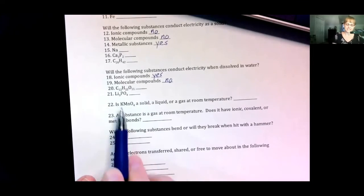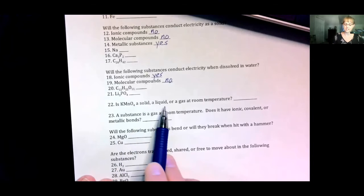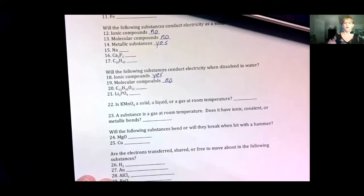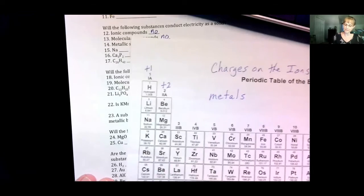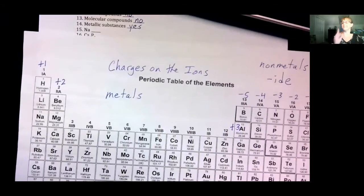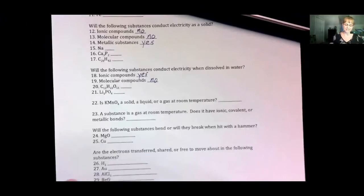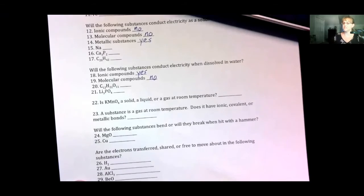Number twenty-two, is KMNO4 a solid, a liquid, or a gas at room temperature? Well, remember, ionic compounds are always solids at room temperature. And metals, except mercury, are always solids at room temperature. Molecules can be solids, liquids, or gases. So, let's see which one this is. KMNO4. Remember, K is a metal, MN is a metal, O is a non-metal. Aha! So, this is ionic. Ionic compounds are always solids.